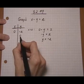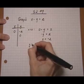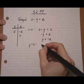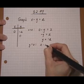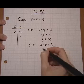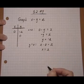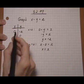Now we put in y is zero and we're going to find the x that goes with that. If y is zero, the equation becomes x minus zero equals two, or x equals two. When y is zero, x is two.